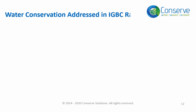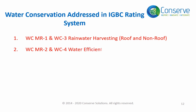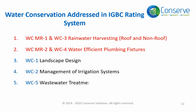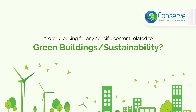To summarize, the IGBC rating system addresses water conservation in six groups: number one, MR1 and Credit 3 — Rainwater Harvesting, Roof and Non-Roof; number two, Mandatory Requirement 2 and Credit 4 — Water Efficient Plumbing Fixtures; number three, Landscape Design; number four, Management of Irrigation Systems; number five, Wastewater Treatment and Reuse; and number six, Water Metering.